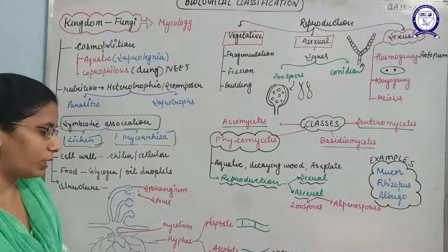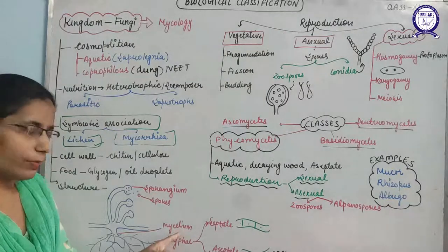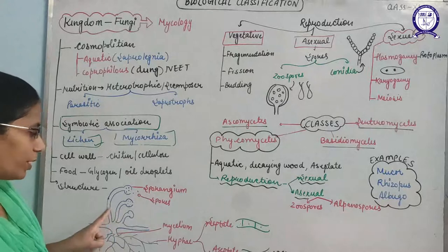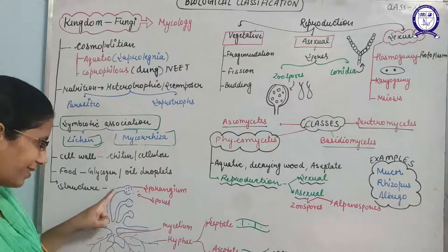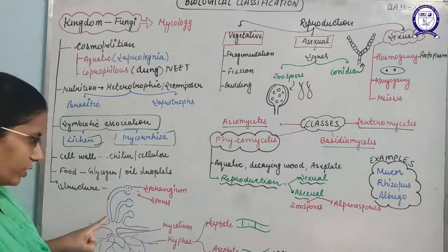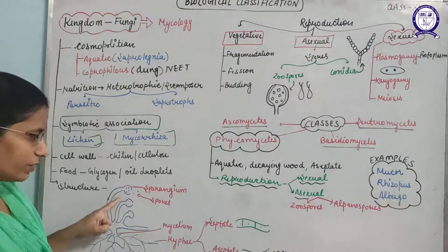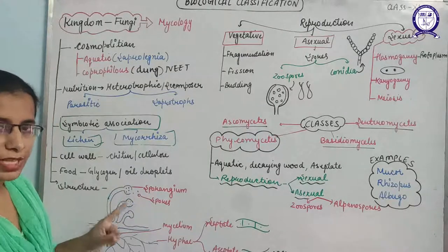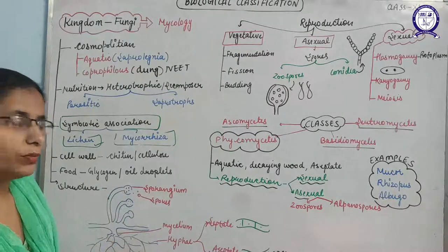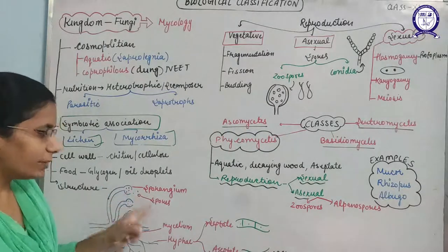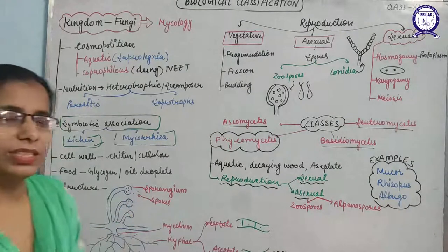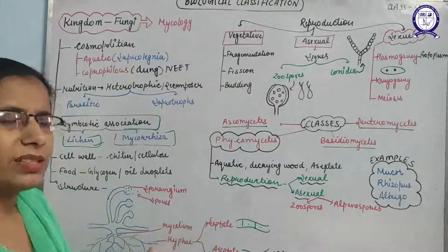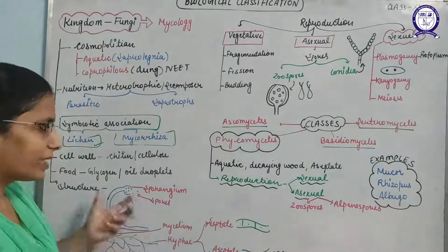These thread-like hyphae join together to make mycelium. When a number of mycelia join together they form the sporangiophore — the stalk-like structure. The sporangiophore develops the fruiting body known as the sporangium. The sporangium releases a number of spores, which disperse with the help of air and water currents. This is the general structure of fungus.